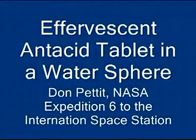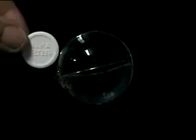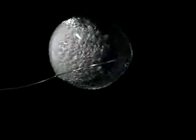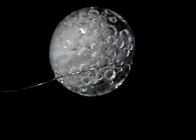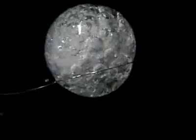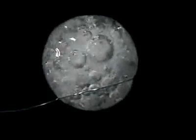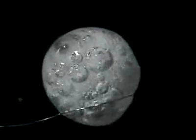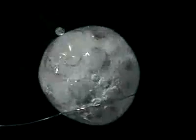Effervescent antacid tablet in a water sphere. Here's a sphere of water 50 millimeters in diameter with an effervescent antacid tablet. Bubbles form rapidly from a chemical reaction. This is an example of heterogeneous nucleation, where bubbles form on a solid surface and can get a momentum exchange and travel out into the fluid.